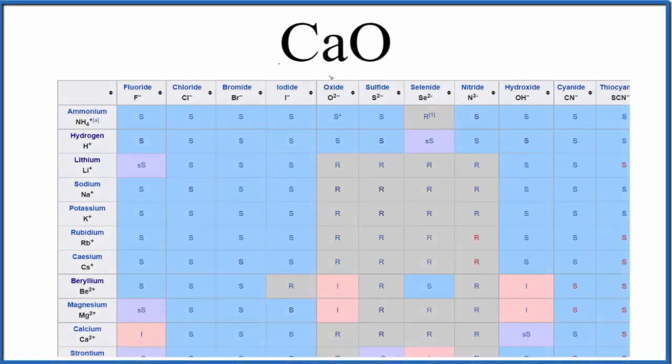In this video we'll look at whether CaO is soluble or insoluble. This is calcium oxide. So when you put calcium oxide in water, the question is does it dissolve, does it break apart into its ions?